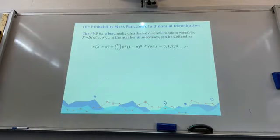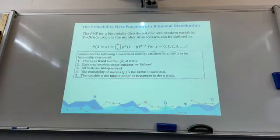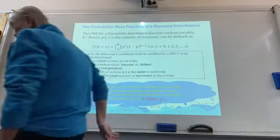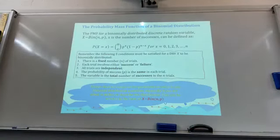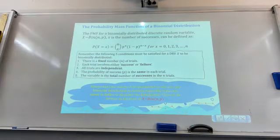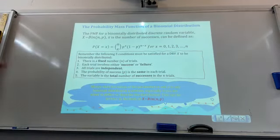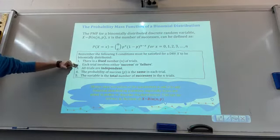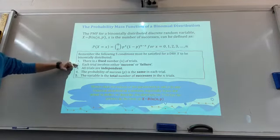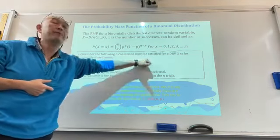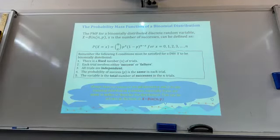So just recall the probability mass function for a binomially distributed discrete random variable X, which is a binomial distribution with parameters n and p, where X is the number of successes, n is the number of trials, and p is the probability of success. There's always a fixed number of trials n. Each trial must be either success or failure - success is one, failure is zero - and there's a probability associated with success and a probability associated with failure. They are complements of each other; they add up to one.